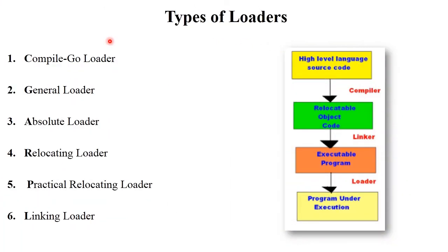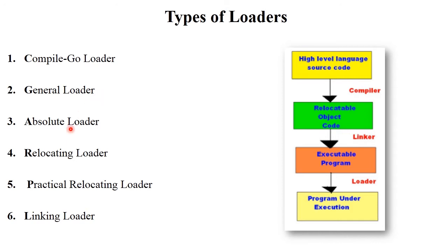There are six types of loaders: compile and go loader, general loader, absolute loader, relocating loader, practical relocating loader, and linking loader. In this video we will learn about the first two types — compile and go loader and general loader. The remaining types will be covered in part two.